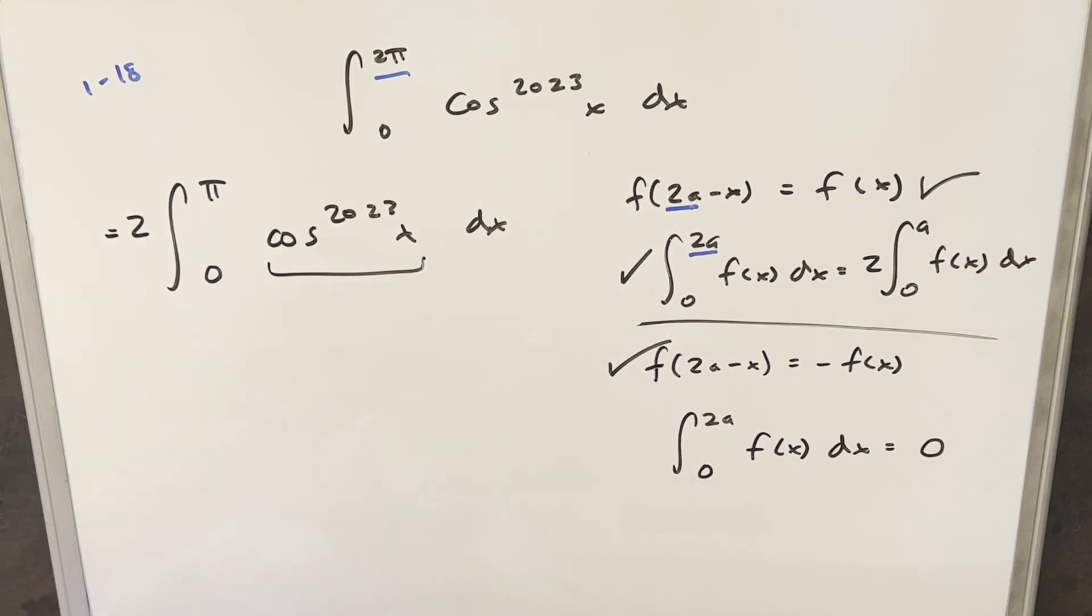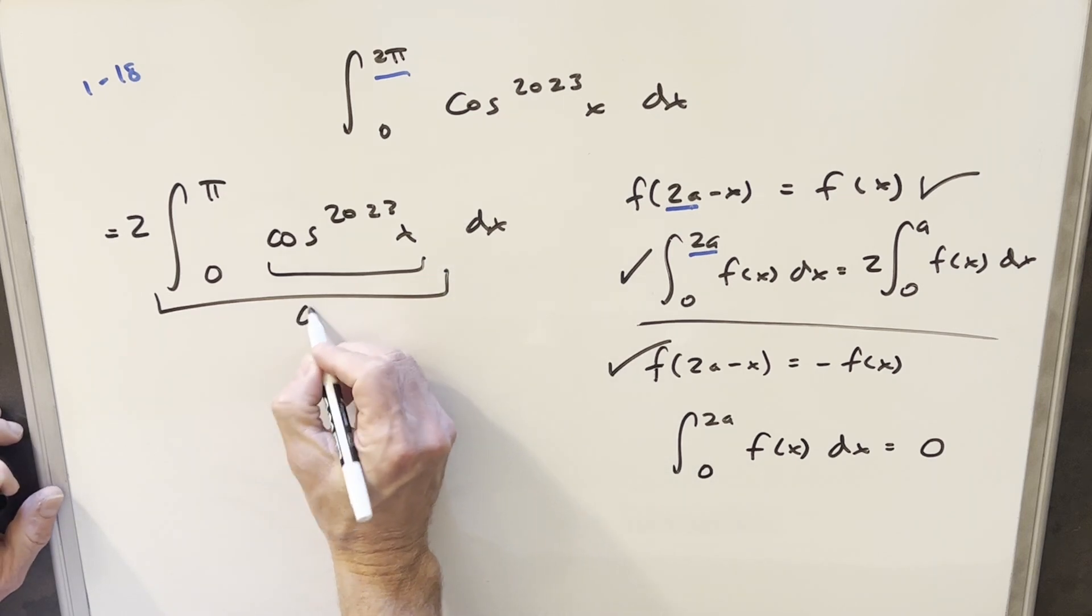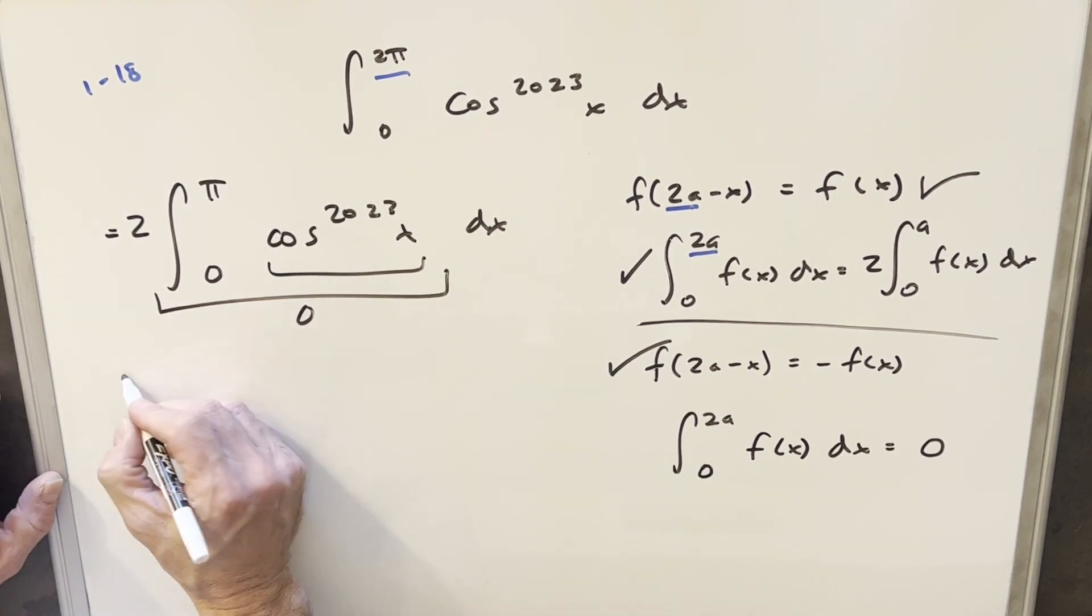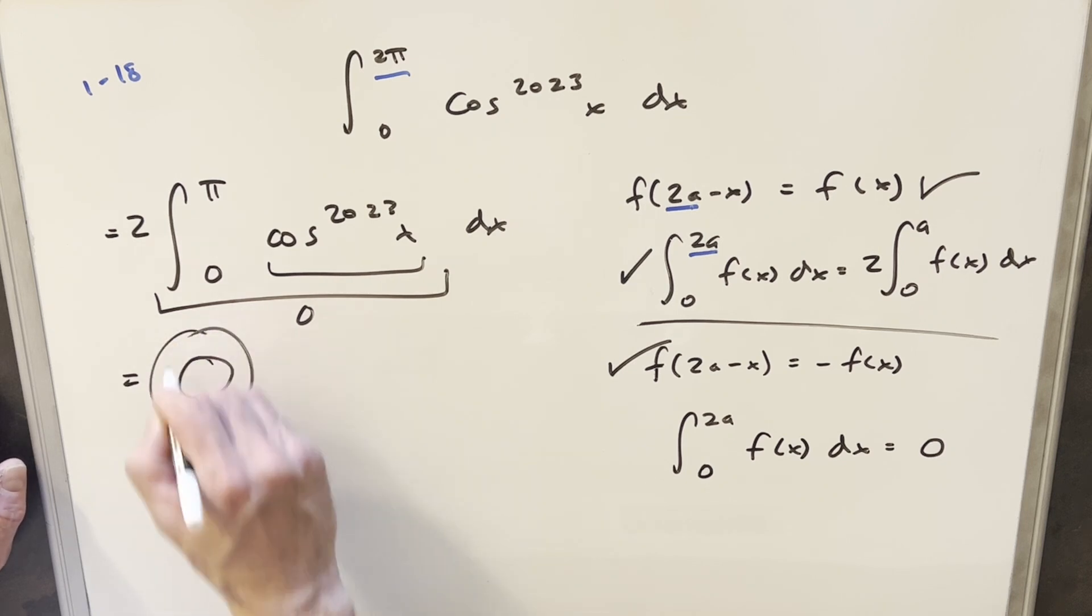But with this true, that just says our integral here is zero. So, it's saying all this is zero, but we're multiplying it by two, but two times zero gives us our solution of just zero.